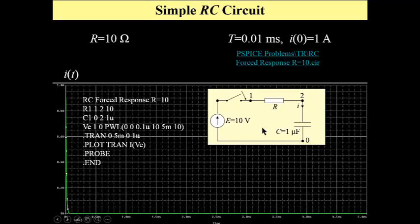We have a step input to an RC circuit, C1 microfarad and R10 ohm resistance, and our trace is a mesh current.